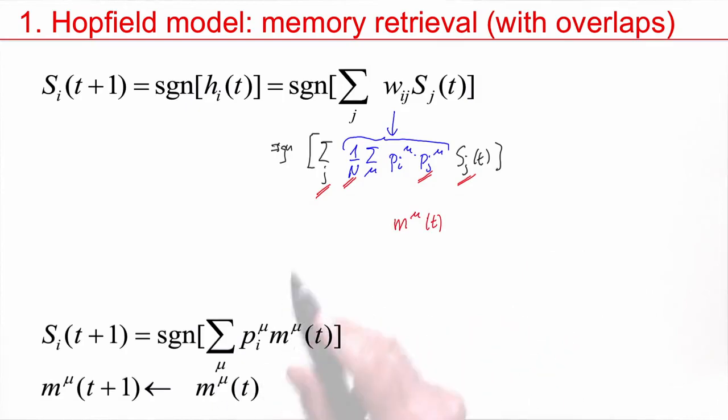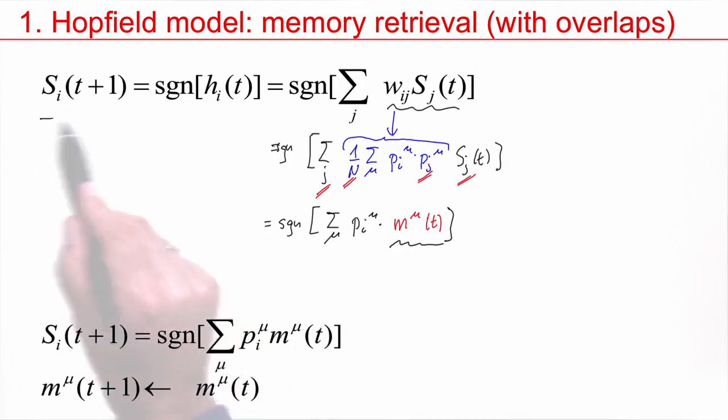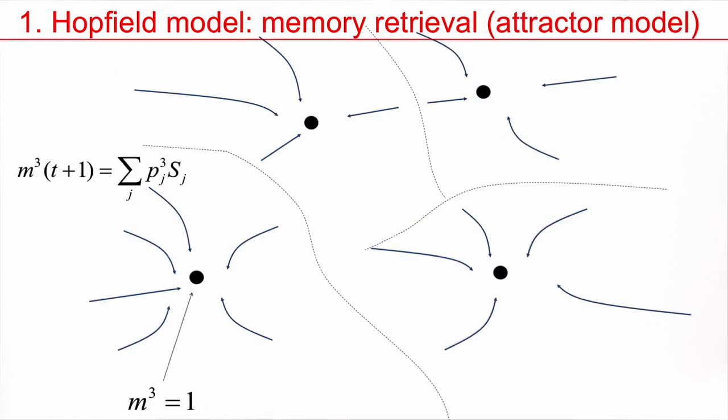And then I copy the rest, sine function. What remains is the sum over the patterns PI mu, M mu of t. So the sum over all these different neurons j is equivalent to looking at the overlap. I have the overlap on the right hand side. And on the left hand side, I have the state of the neuron at the next time step. But the overlap itself in the next time step will be a sum over all these different neurons. So I can hope that this gives rise to a mapping from this overlap at time step t to the overlap at the next time step. And this is the central idea that we are going to exploit in the following.